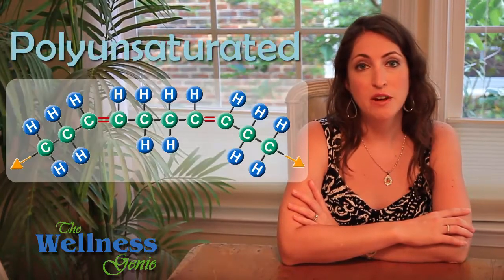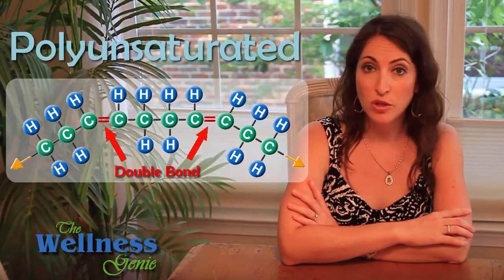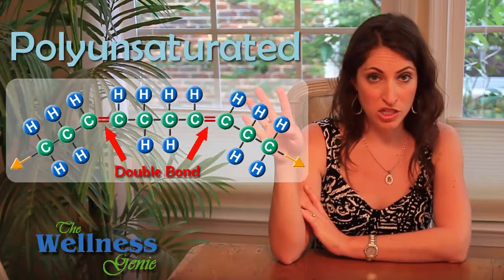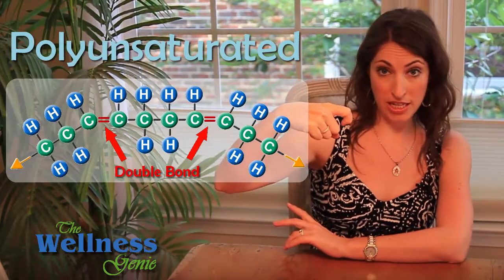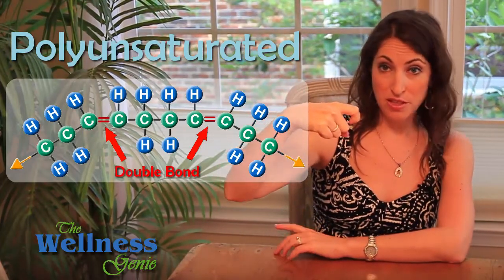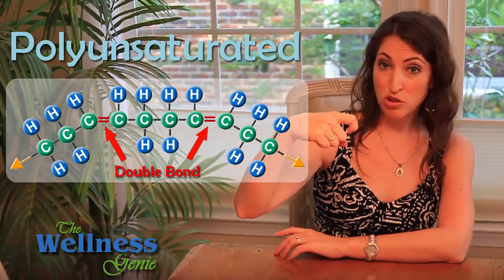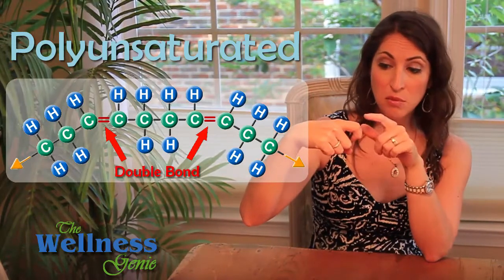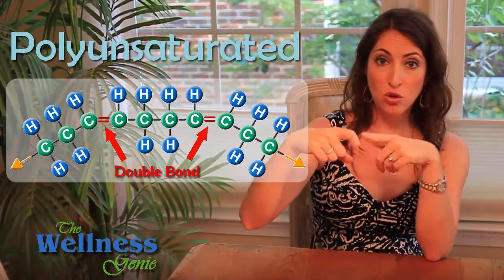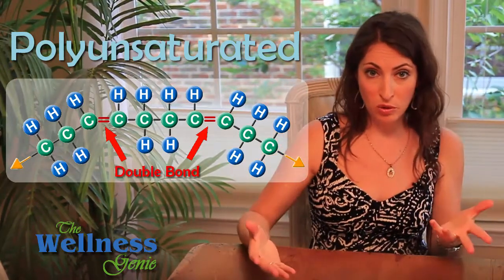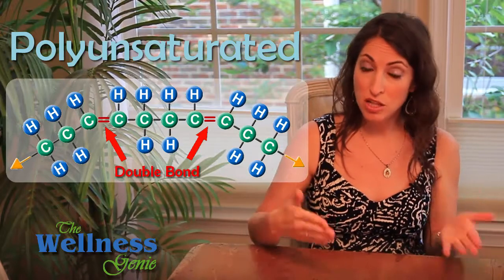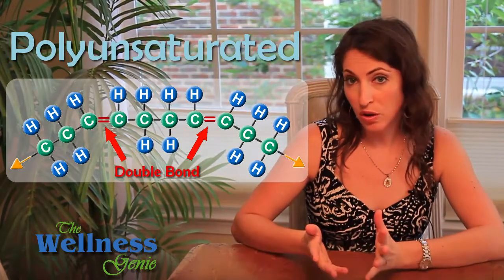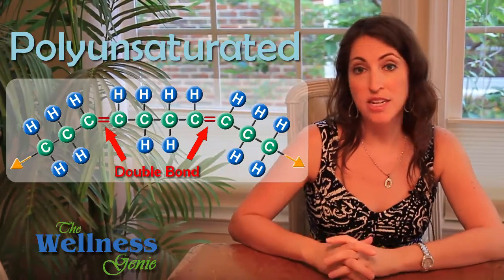Polyunsaturated fats have two or more double bonds and are missing four or more hydrogens. This makes the chemical structure highly unstable, and it can easily break at all the bends — or in chemical language, the double bonds. Vegetable oils are polyunsaturated fats.